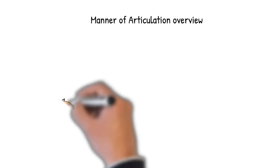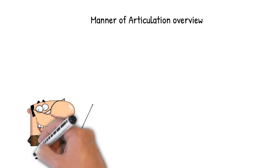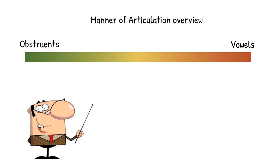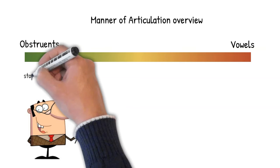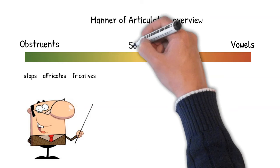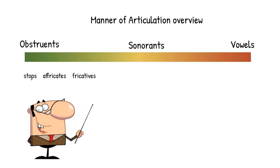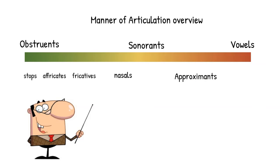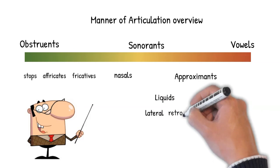On the left end of our continuum, we've got our obstruent sounds, the most constricted of our consonants. And within the obstruent group, we've got stops, affricates, and fricatives. Sonorant sounds are less constricted than obstruents. And the first type of sonorant sound we looked at were the nasal consonants. We then turned to the approximant sounds, focusing first on the liquids. Within the class of liquid sounds, we learned of two types of manner, lateral and retroflex.